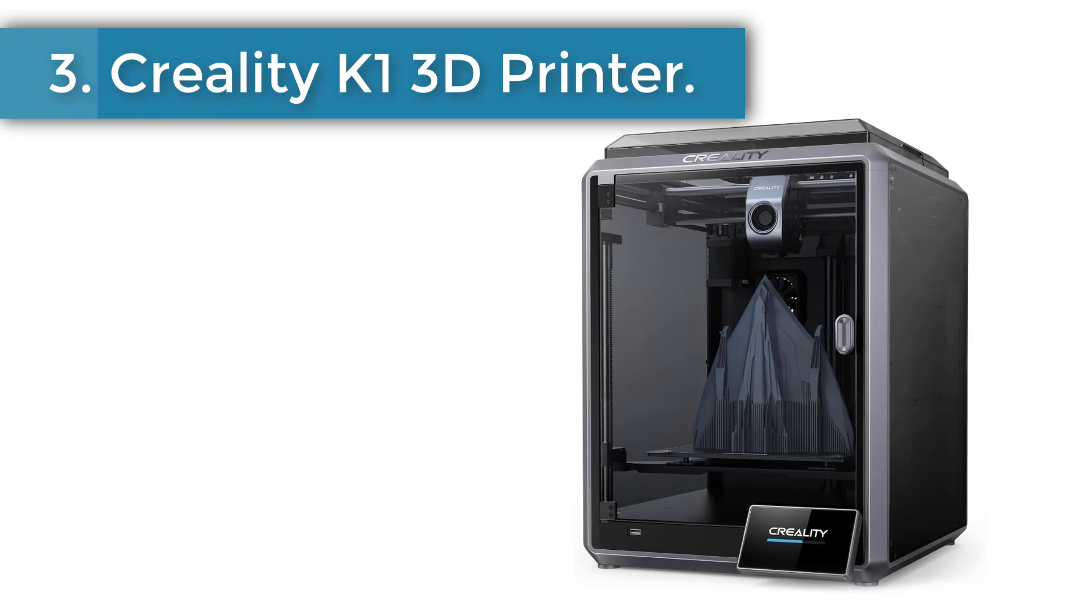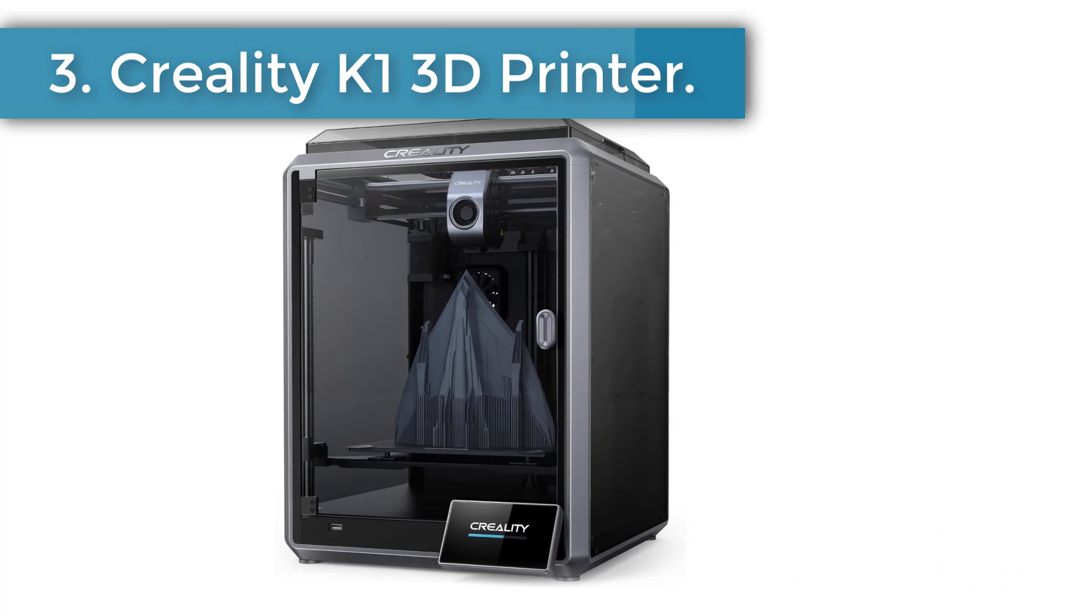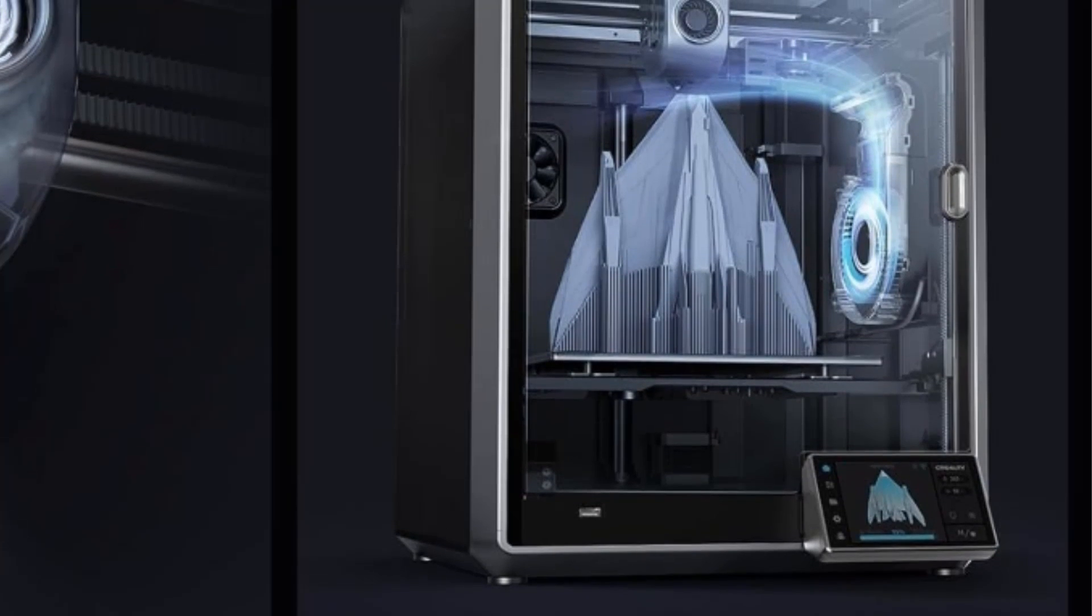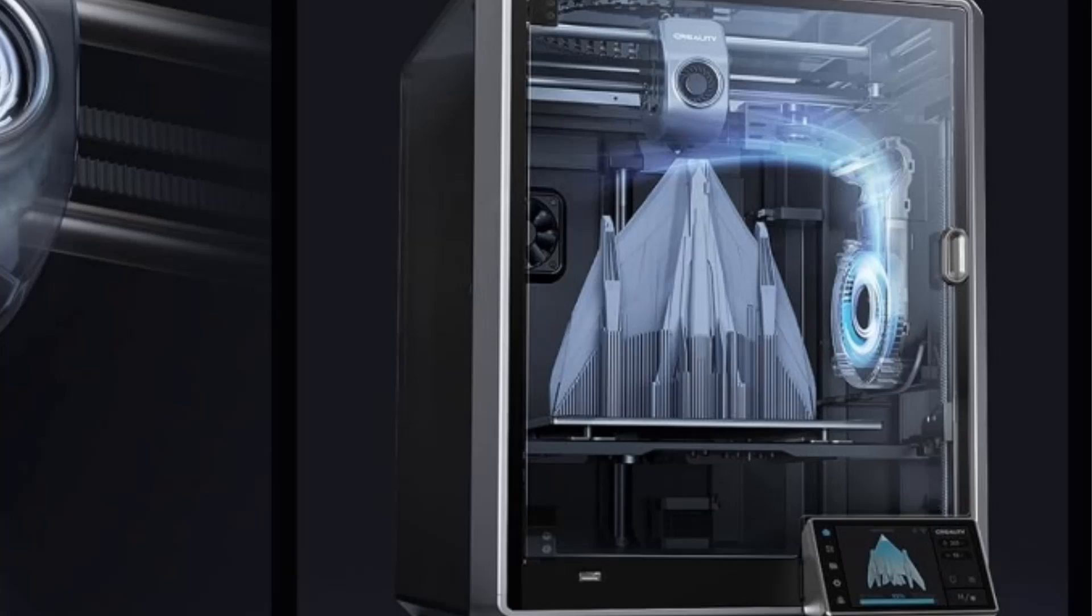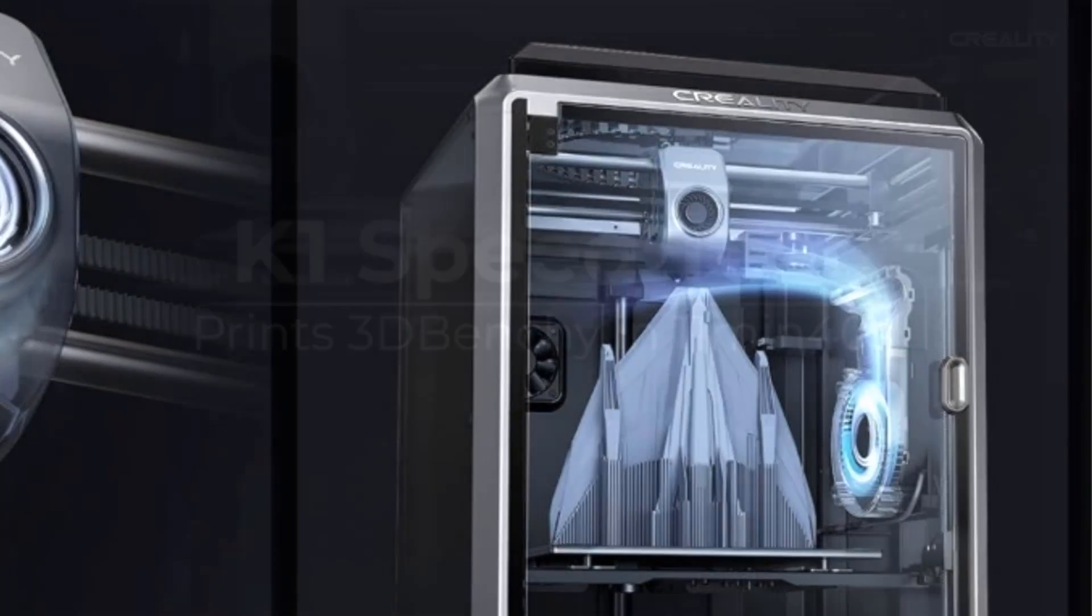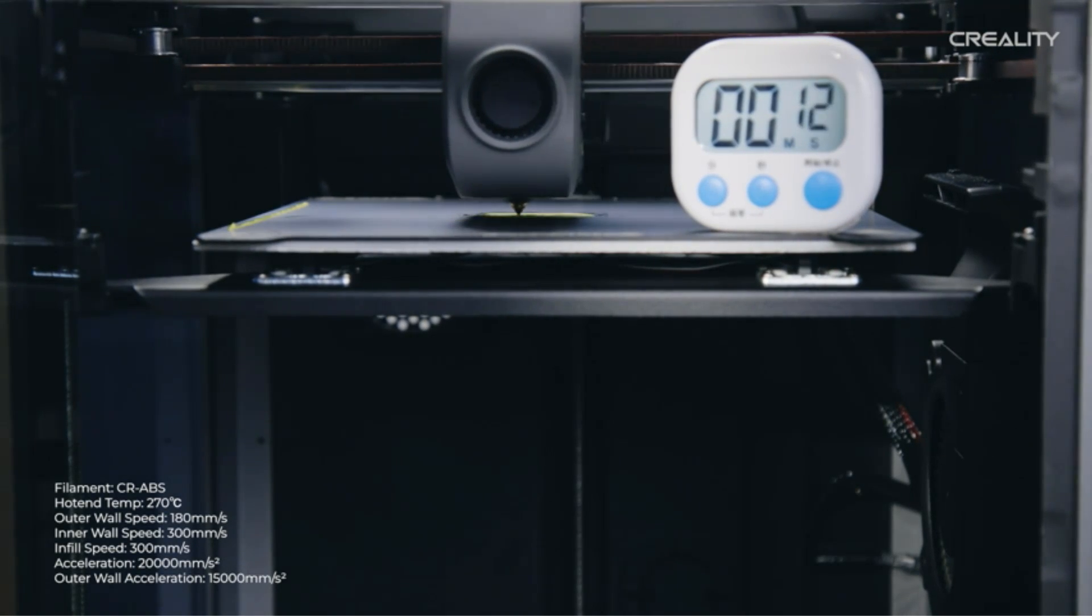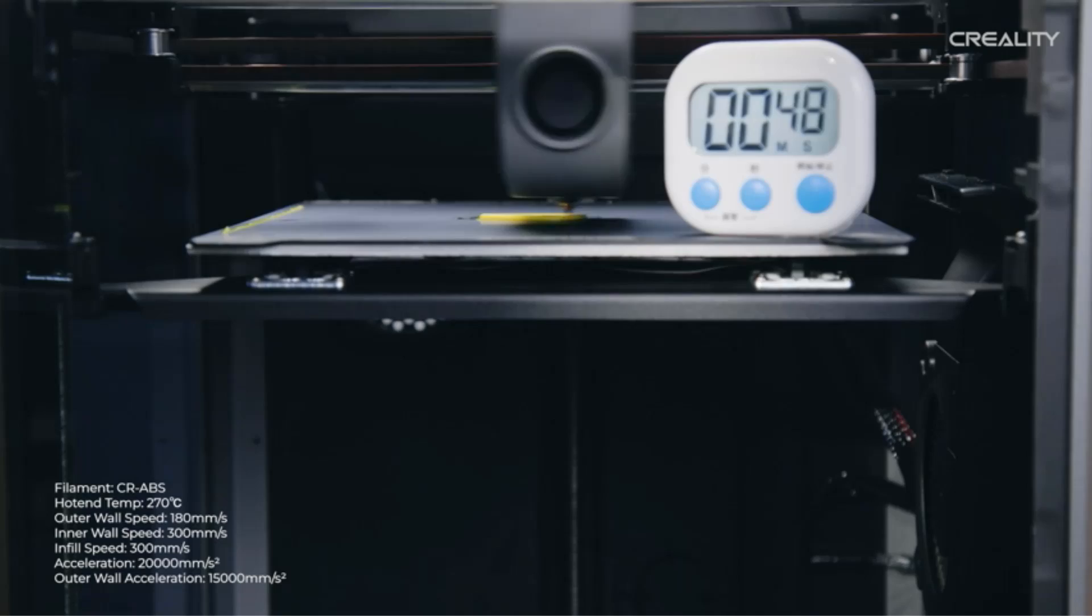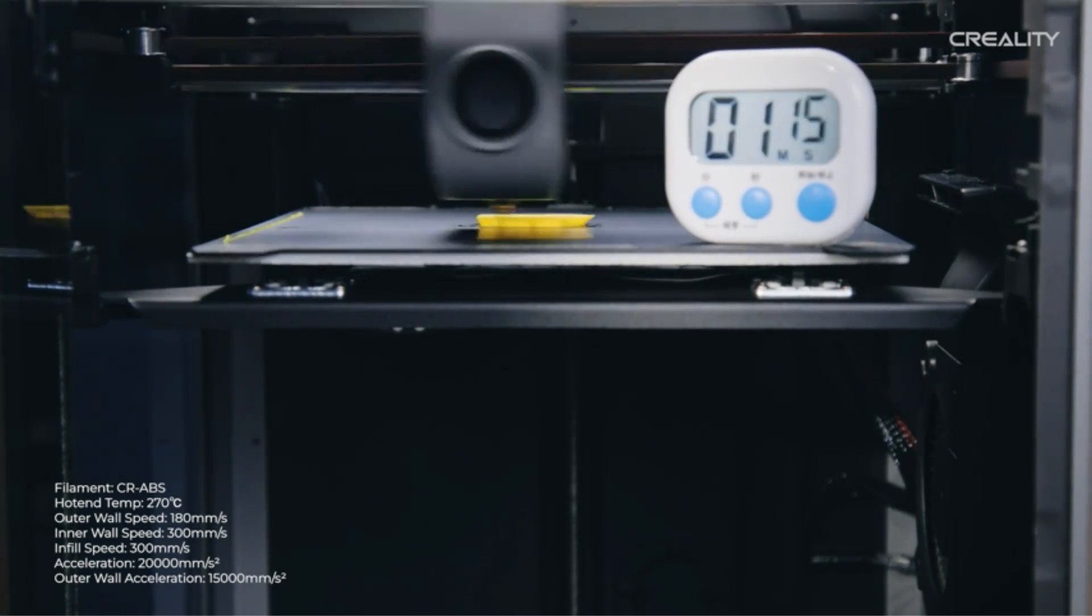Number 3. Creality K1 3D Printer. The Creality K1 3D printer is built for speed, reaching up to 600 millimeters per second and 20,000 millimeters/s² acceleration, reaching 200°C in just 40 seconds. That's 12 times faster than regular FDM 3D printers. Perfect for professionals and beginners.